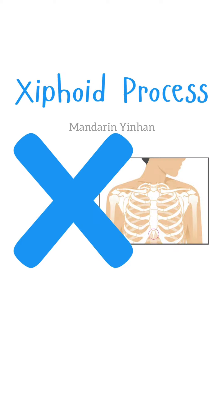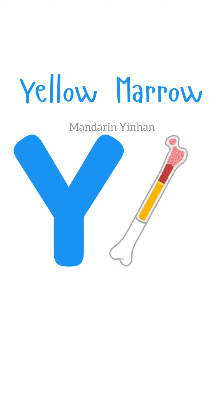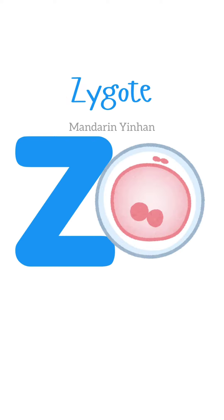Xiphoid process. Xiphoid process. Yellow Marrow. Yellow Marrow. Zygote. Zygote.